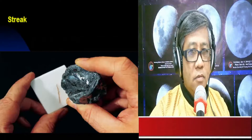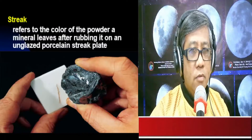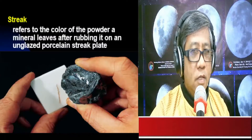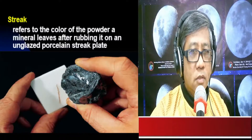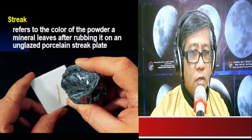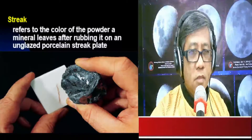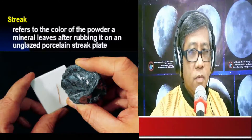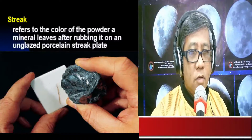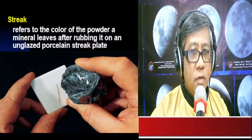Another physical property is streak. Streak refers to the color of the powder a mineral leaves after rubbing it on an unglazed porcelain streak plate. The color of the mark left on the streak plate after rubbing the mineral is its streak.